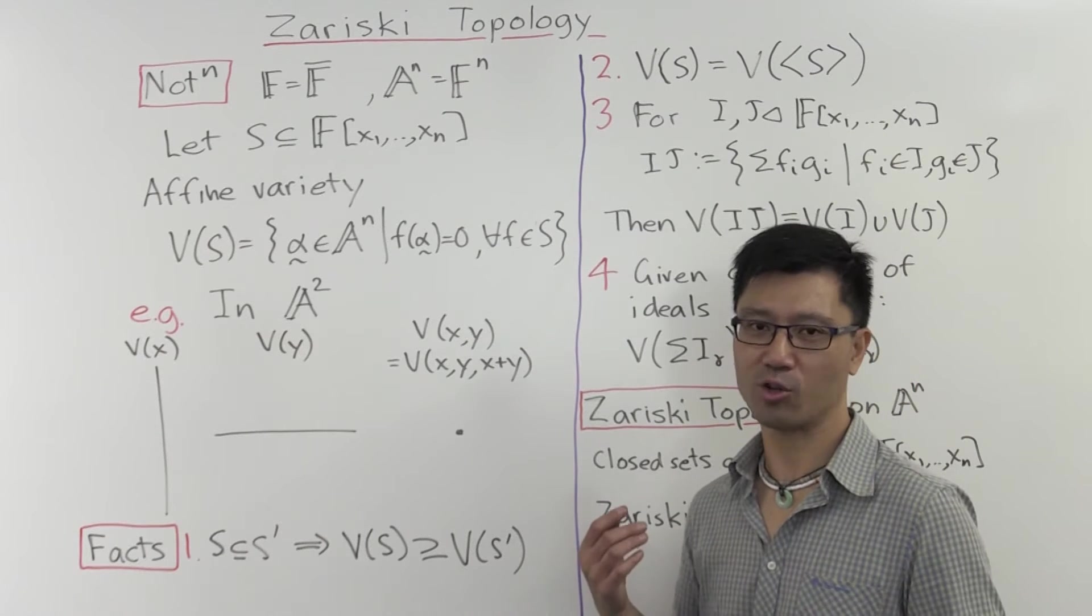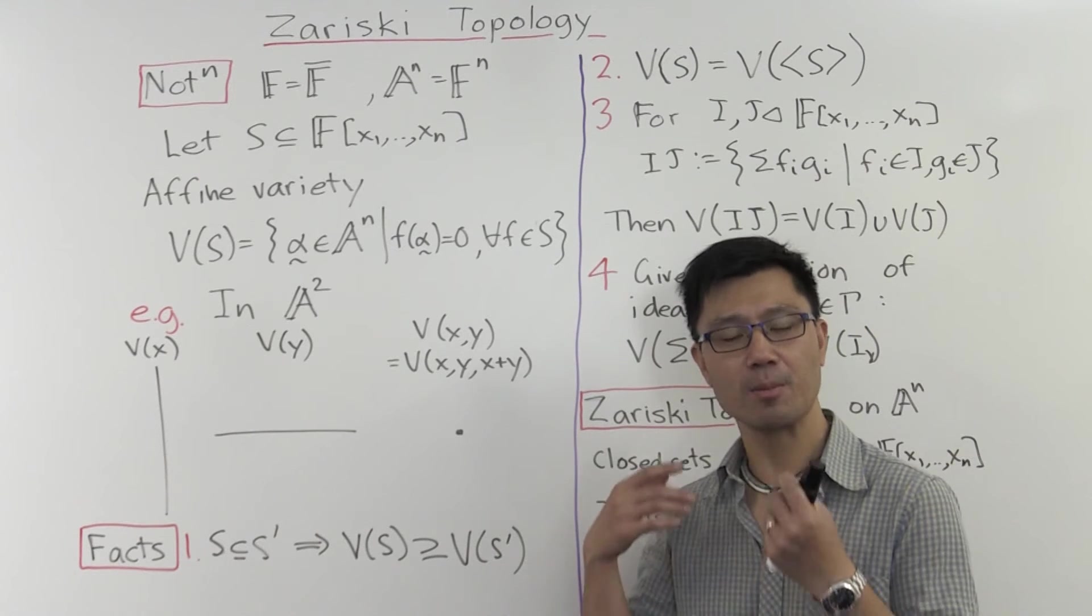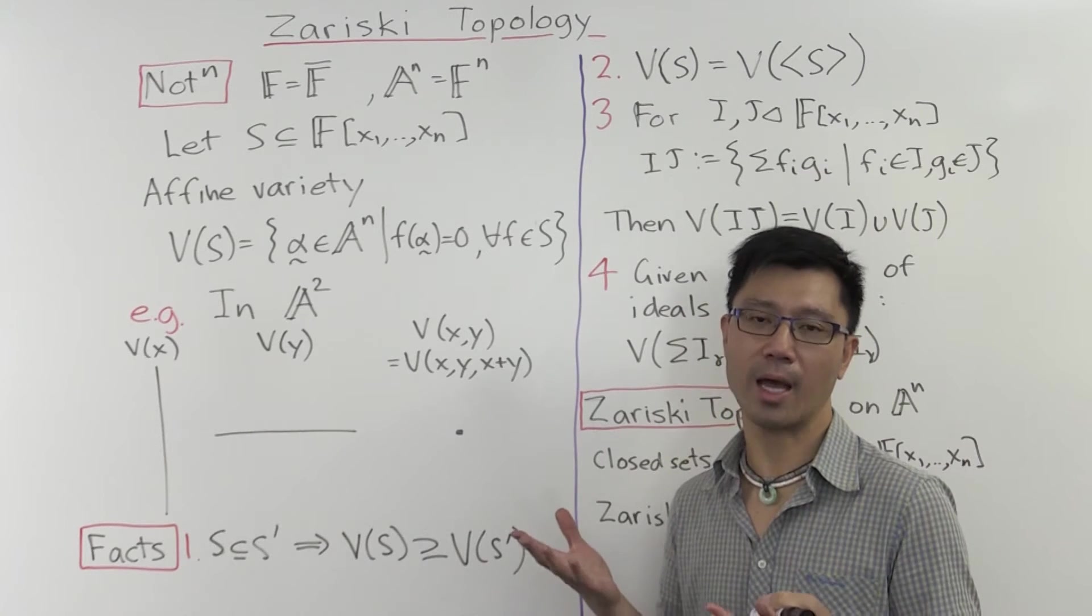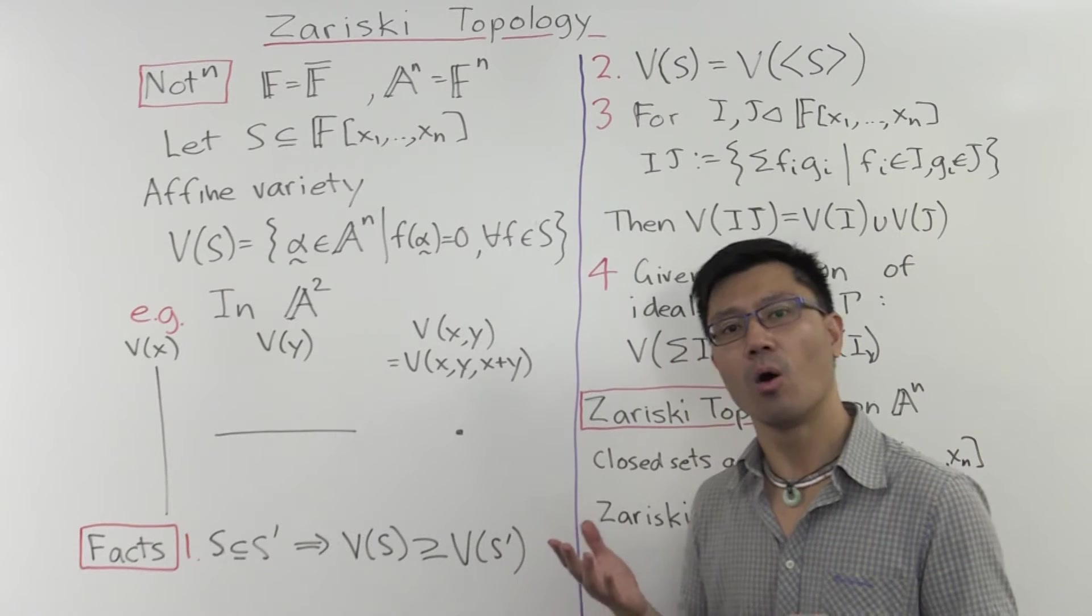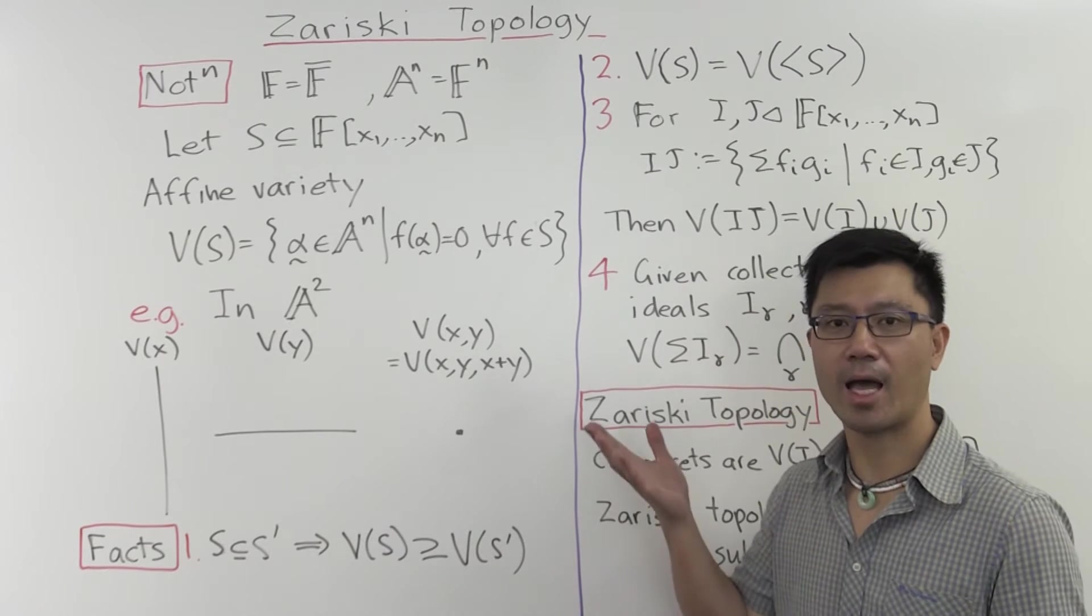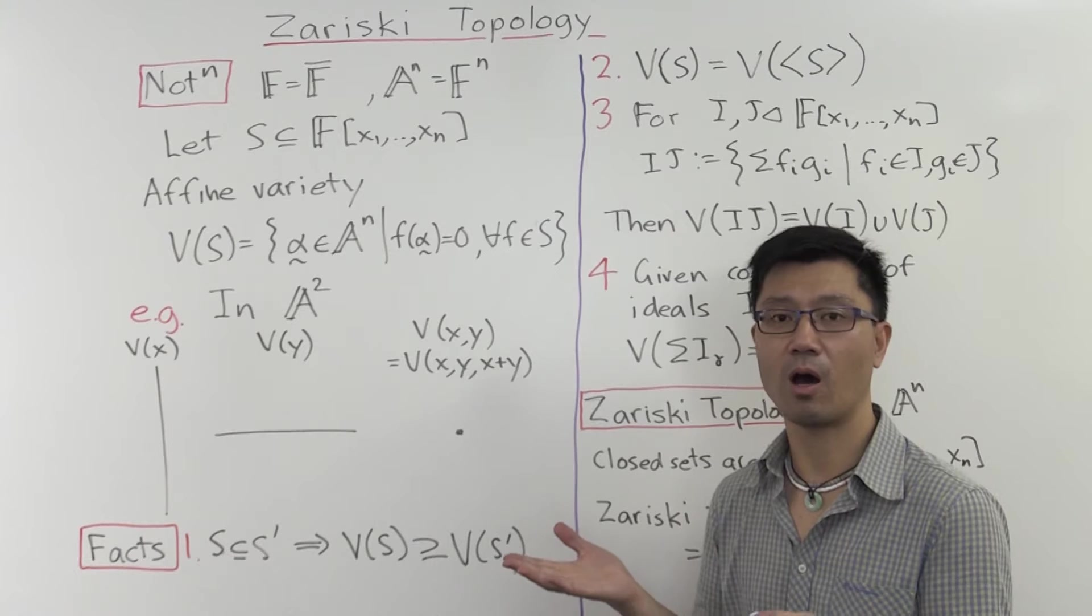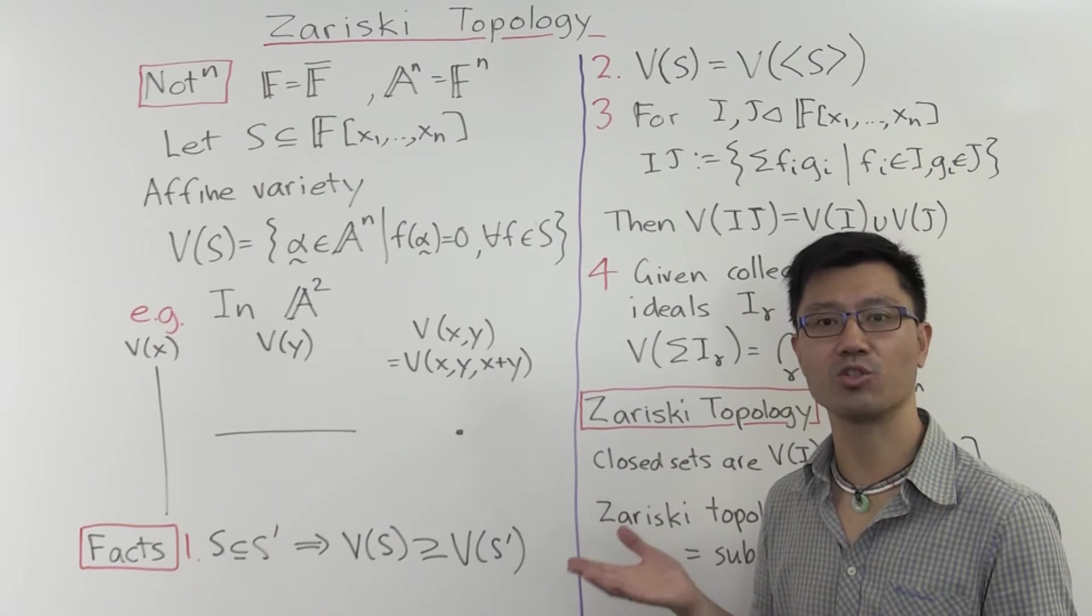In my video on the algebraic incarnation of points, we saw how the points manifest themselves purely algebraically in terms of the coordinate ring. What I want to show in this video today is how the topology of the geometry also manifests itself purely algebraically.